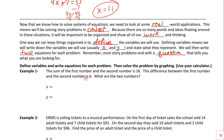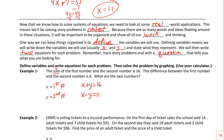We'll use x for the first number and y for the second number. Sum means addition, so x + y = 16. Difference means subtraction, so x - y = 6. Then it asks what are the two numbers.